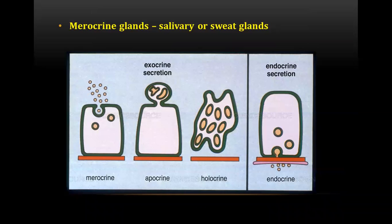The first question was about merocrine glands — specifically salivary and sweat glands. These are merocrine glands, which are cell secretory glands that secrete their substances by exocytosis, called eccrine secretion. The apocrine glands are glands in which a portion of the secreting cell's body is lost during secretion. Examples include the ear ceruminous gland and Moll's gland in the eyelid.